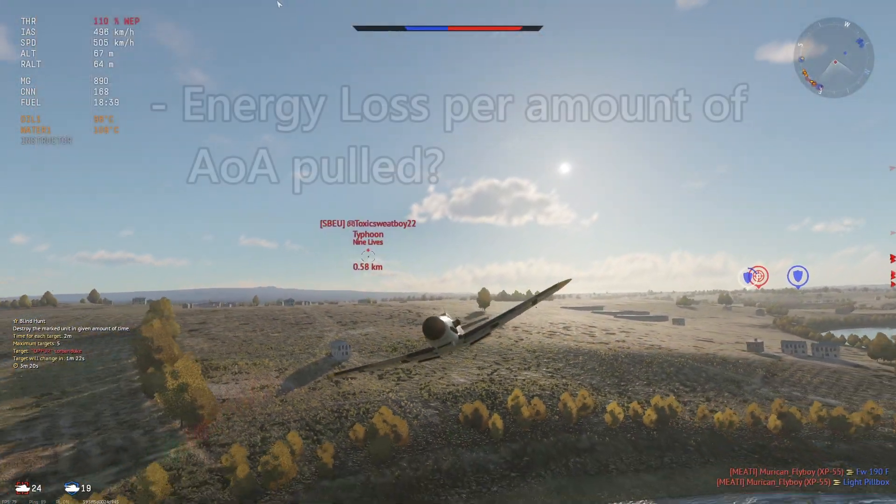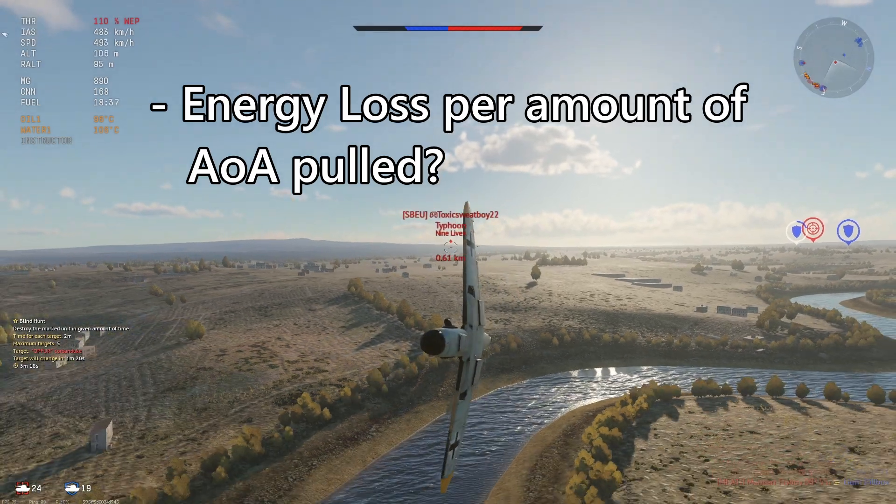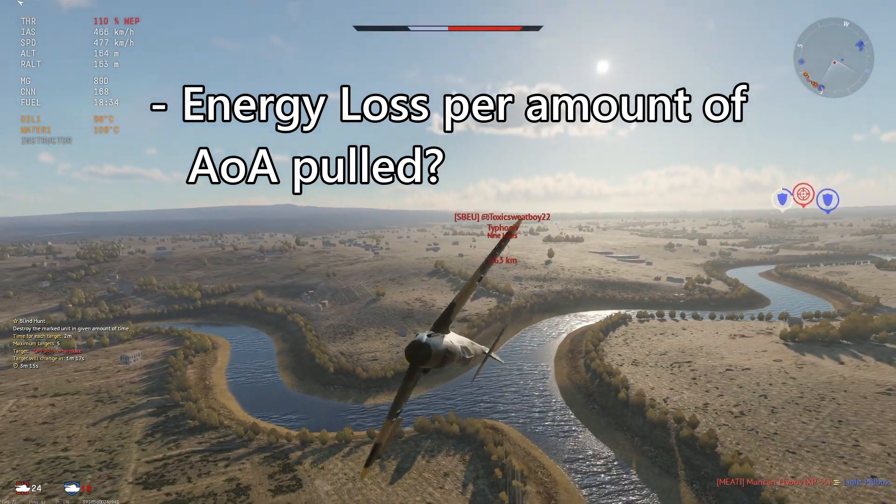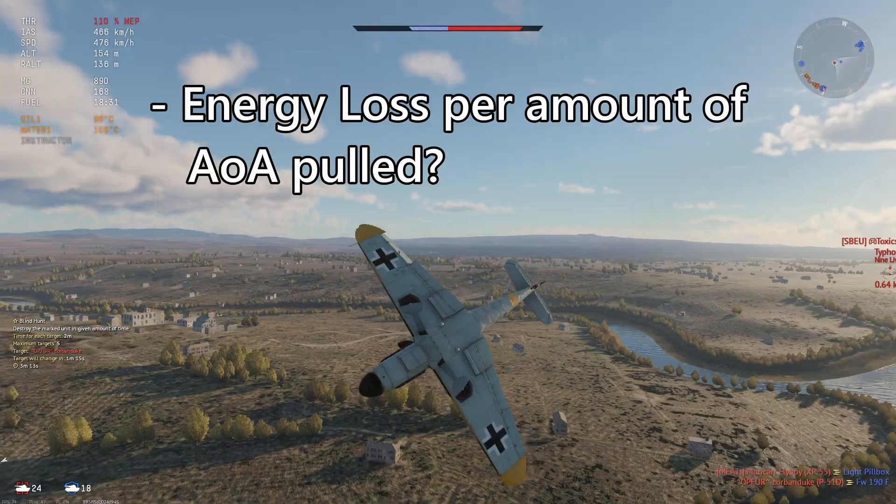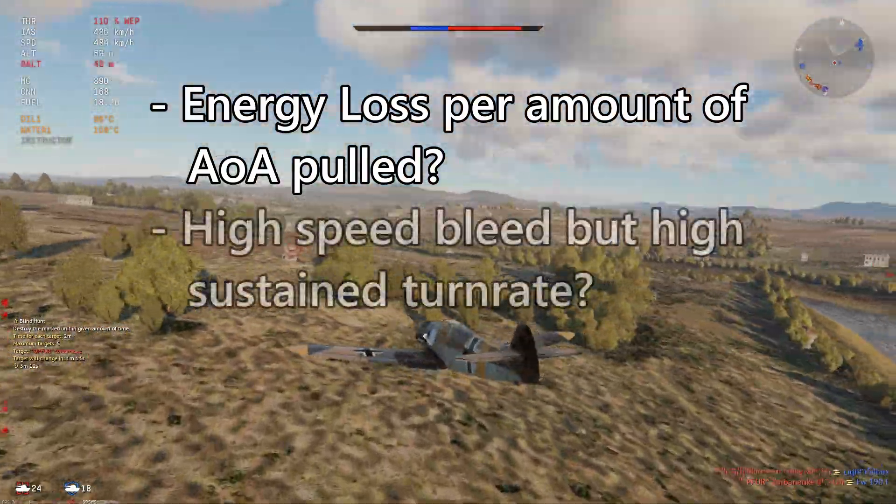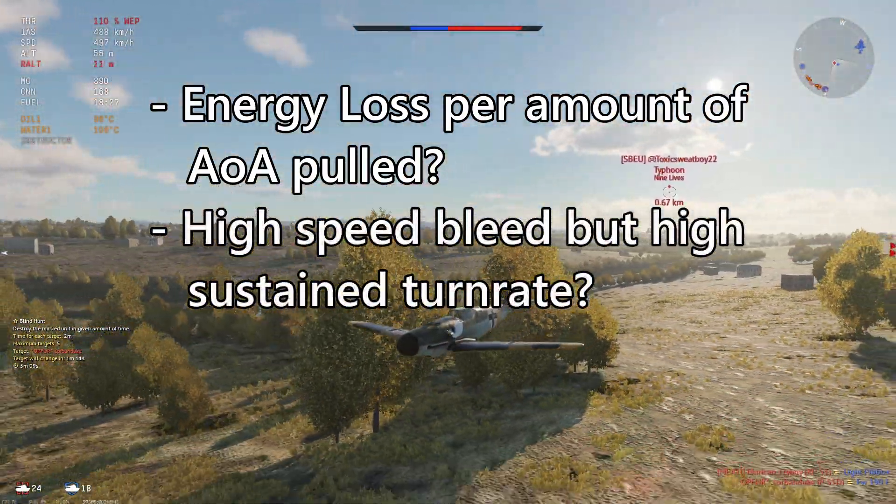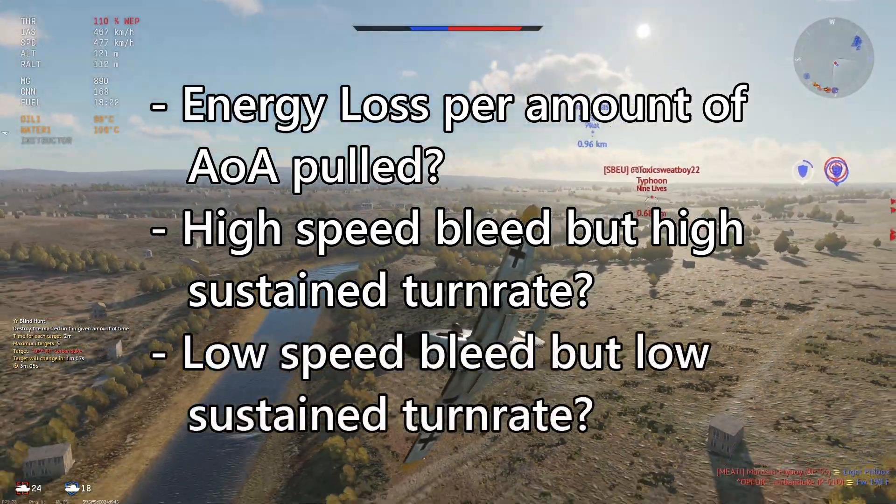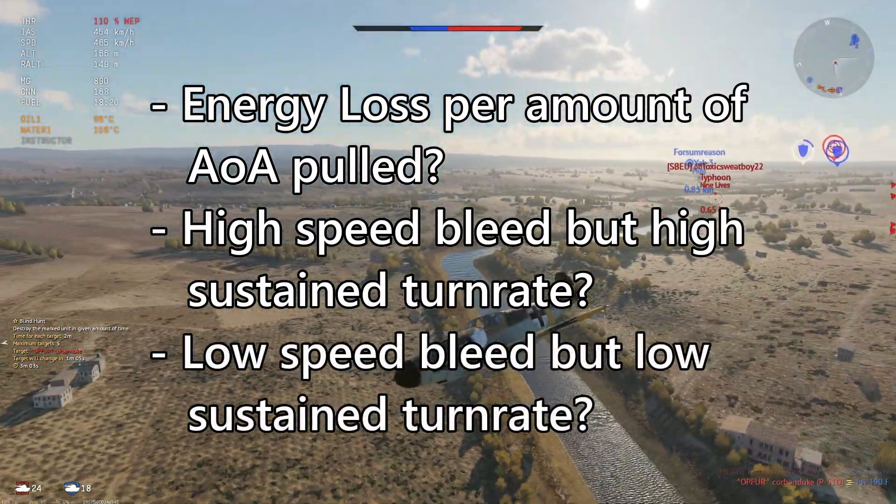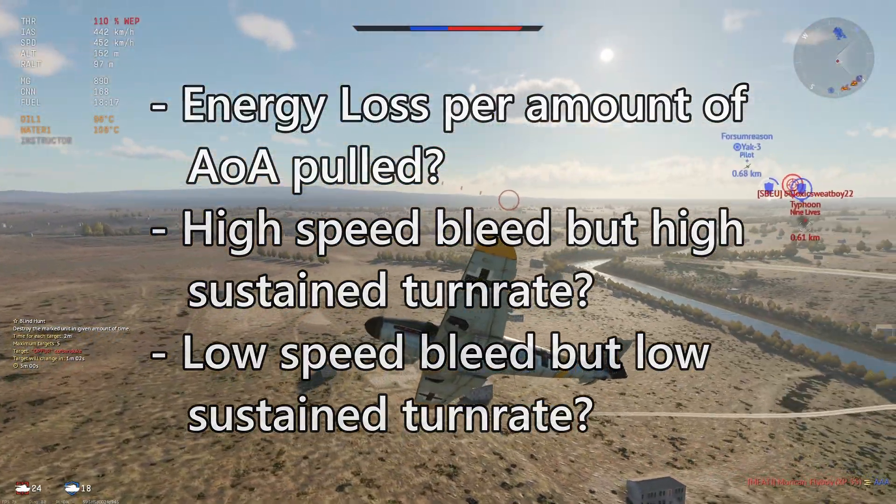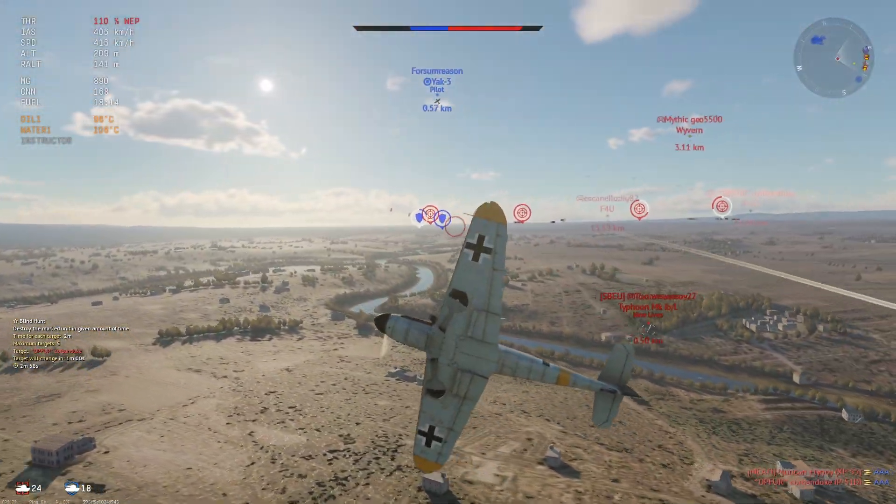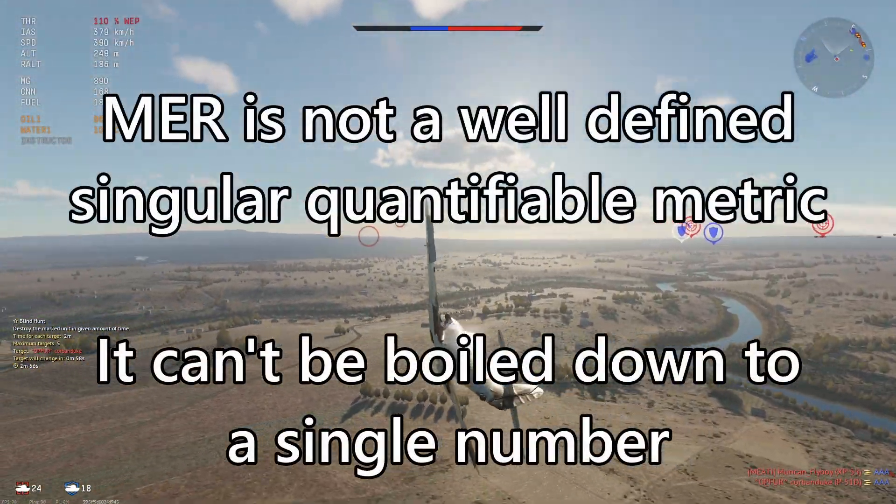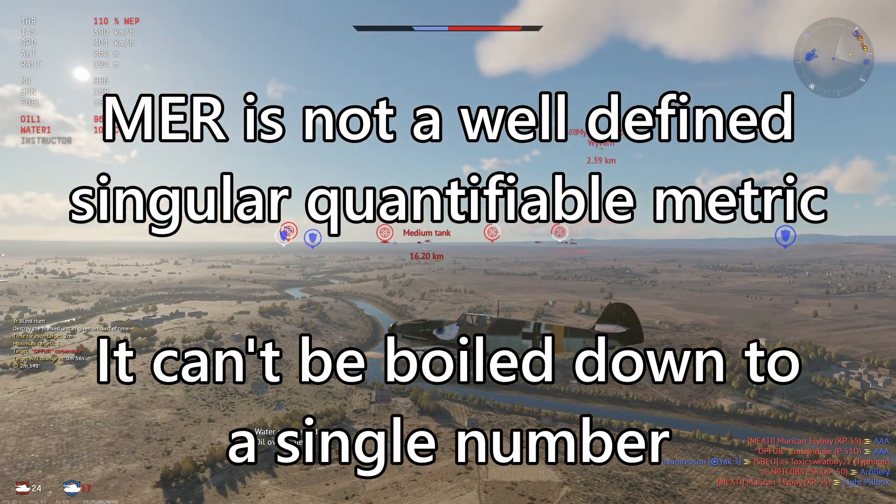But you can see that this kind of simplification neglects the amount of variability that exists when discussing how well an aircraft holds its speed in a turn. Some planes lose more speed because they can pull more AOA and have tighter turns but otherwise have the same flight characteristics. Does one have a better MER than the other? Or what about a plane that loses a lot of speed in turns but has a very high max sustained turn rate? Or a plane that loses speed slower but has a very low max sustained turn rate?